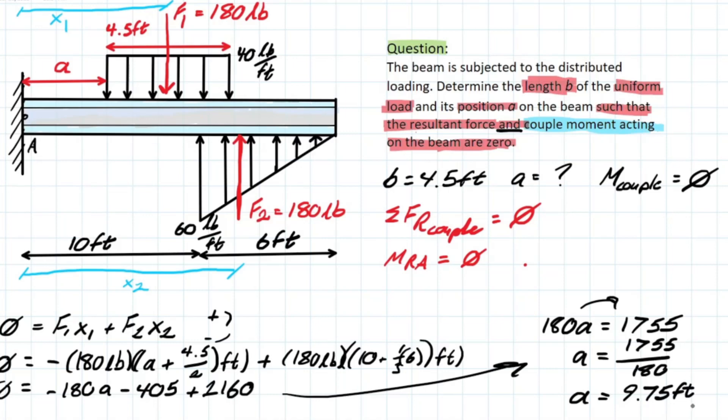So why does this make sense? The couple moment acting on the beam should be zero. So this means that these forces F1 and F2 actually line up in the exact same position. So we have 9.75 plus 4.5 divided by 2 is actually going to equal 12 feet. And we know the distance down here is 12 feet.